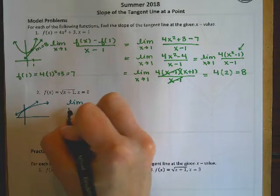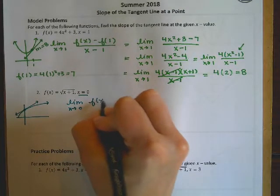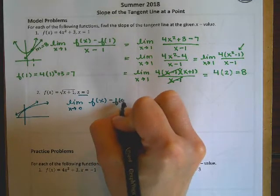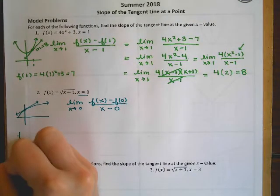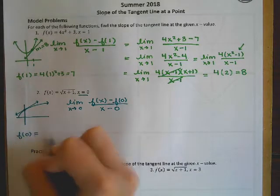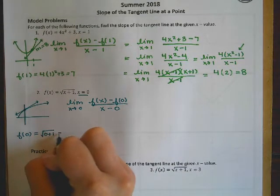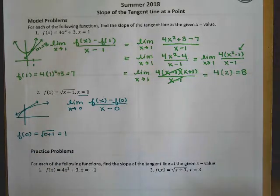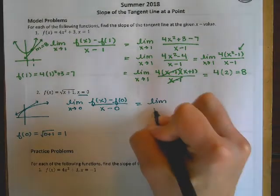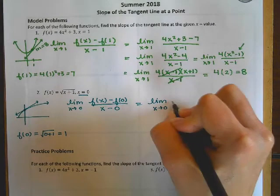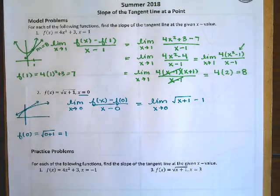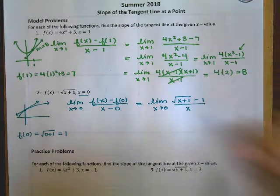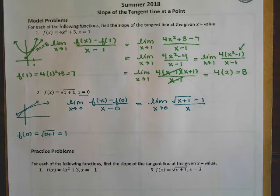So limit as x goes to 0 this time, of f(x) minus f(0) all over x minus 0. And so if I plug in 0, I get the square root of 1, which gives me 1. Okay, so limit as x goes to 0 of f(x) minus f(0), which is 1, all over. And I'm just going to write that as x because x minus 0 is just x.